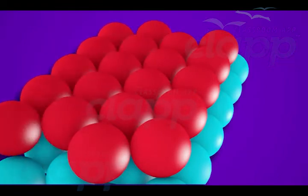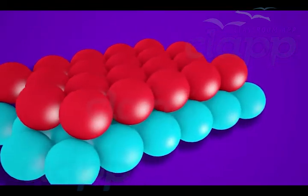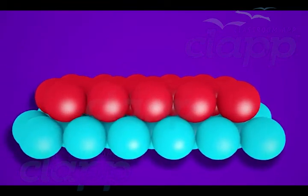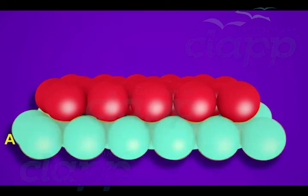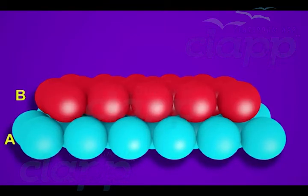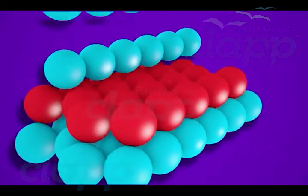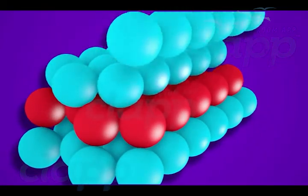Place two layers of spheres such that the second layer fits in the depression of the first layer. The first layer is named as A type and second layer as B type. Place a third layer of spheres such that it covers the tetrahedral voids.